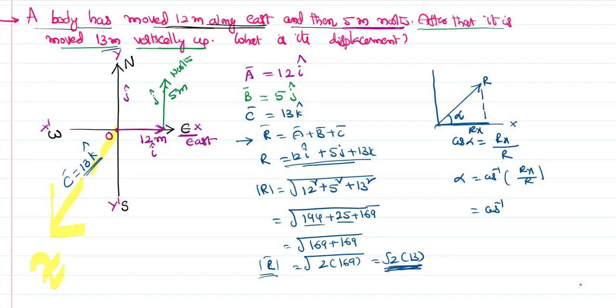That is cos inverse of rx, means 12, r-bar means 13 root 2. This is the direction that it makes with the x-axis. Similarly, we can say its direction with the y-axis as well as the z-axis. That's how we have to solve the problem.